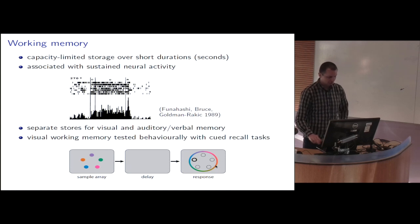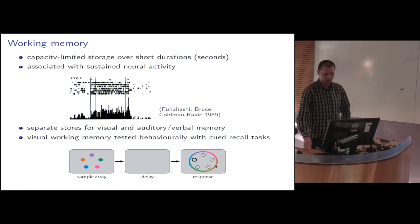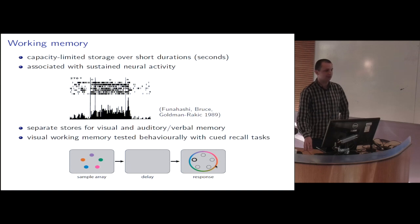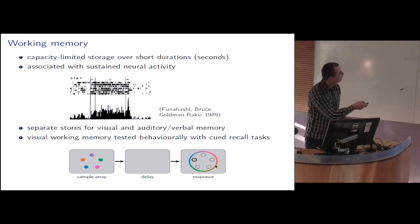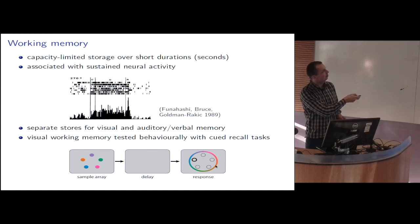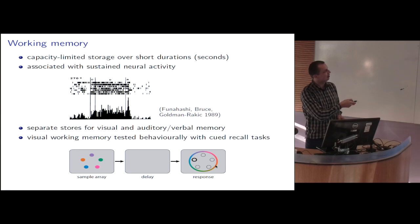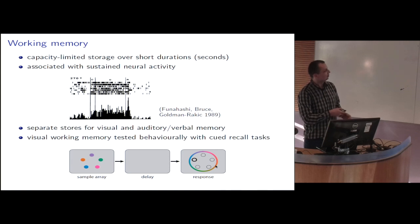Some minimum background on working memory. Working memory is a high precision but limited capacity storage mechanism over short durations. It's typically associated with sustained neural activity, meaning that neurons in working memory tasks start firing when a cue is presented, maintain this elevated firing rate during a delay period without any stimulus being present, and then return to baseline activation after a response has been made. There are believed to be separate stores for visual and auditory or verbal working memory, and I'll be focusing on the visual part.